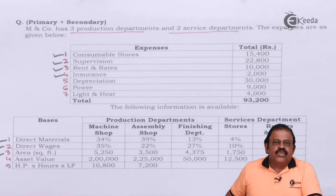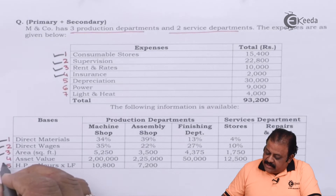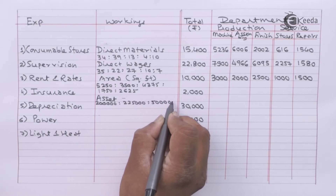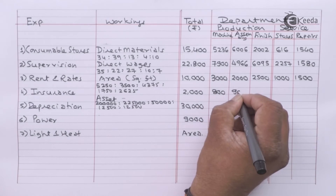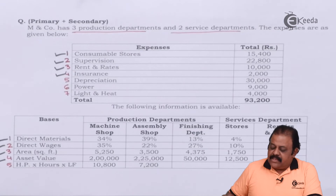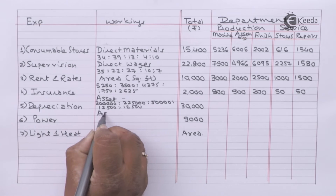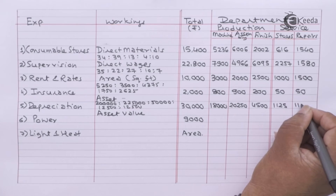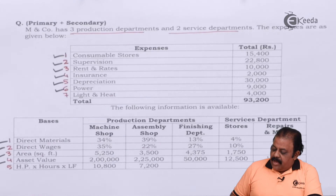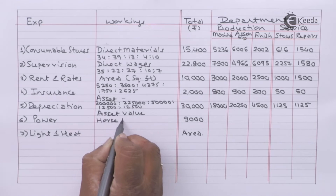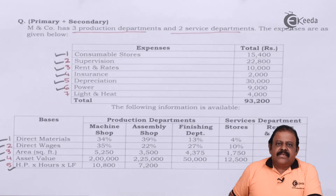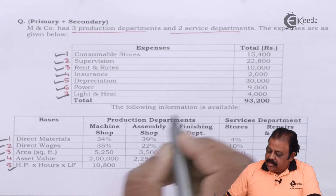Next we have insurance, which will be allocated based on asset value. Next, depreciation will also be allocated based on asset value. Next, power will be allocated based on horsepower. The next expense is light and heat — 4,000 — which will be allocated based on area.